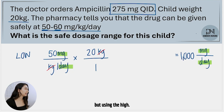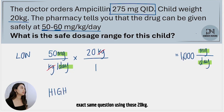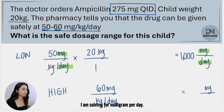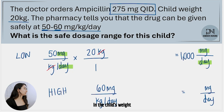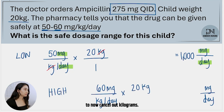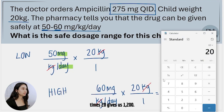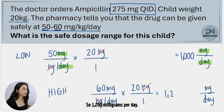Now let's do the same thing but using the high of 60 milligrams per kilogram per day. We're doing the exact same problem using those 20 kilograms, except now we're using 60 milligrams. So 60 milligrams per kilogram per day — I plug in the child's weight of 20 kilograms in the numerator, cancel out kilograms, and end up with only milligrams per day. So 60 times 20 gives us 1200 milligrams per day.